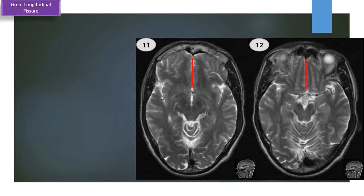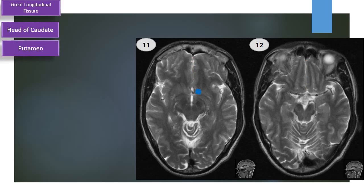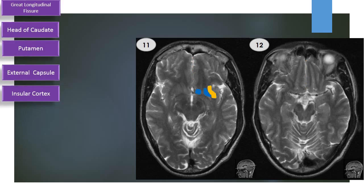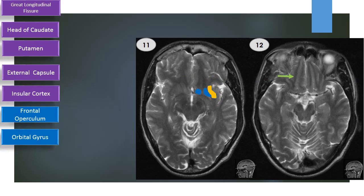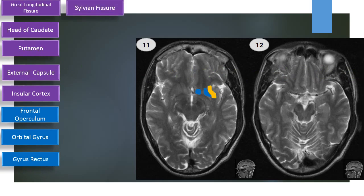Great longitudinal fissure. Head of caudate nucleus. Putamen. External capsule. Insular cortex. Frontal operculum. Orbital gyrus. Gyrus rectus. Sylvian fissure.